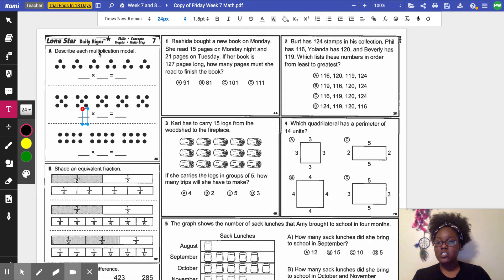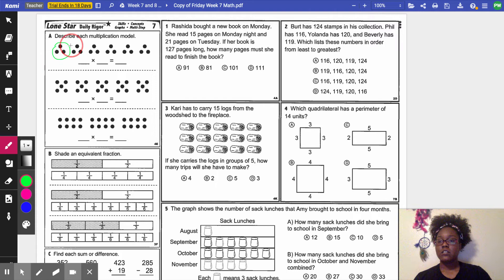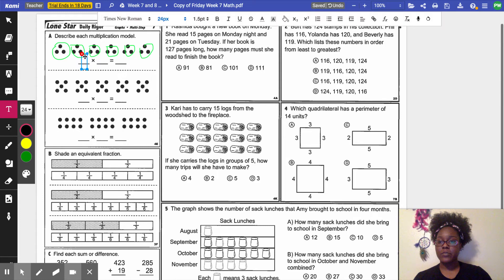Letter A. Describe each multiplication model. So in my classroom, we know that when we have groups, we don't read it as something times something. We read it as blank groups of something. So we've got to see how many groups do we have? We've got 1, 2, 3, 4, 5, 6. It works better to circle it so they can actually see the groups. So we have 6 groups of, and there are 3 in each one. So 6 groups of 3 equals 18. My factors are 6 and 3. My product is 18.